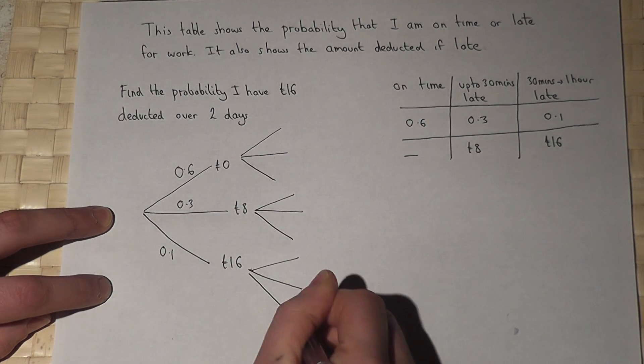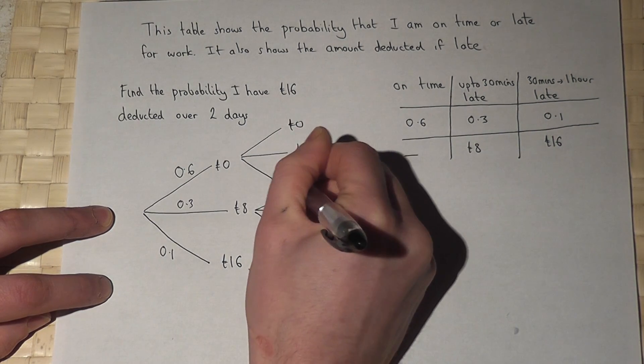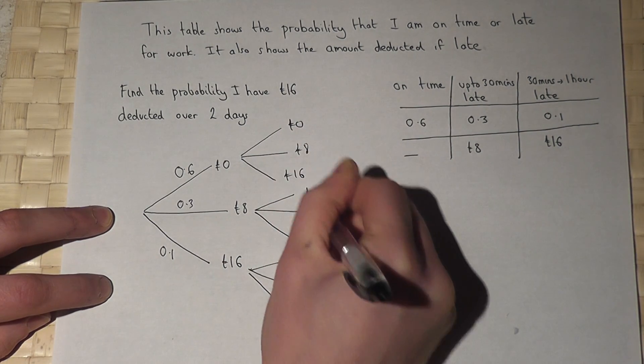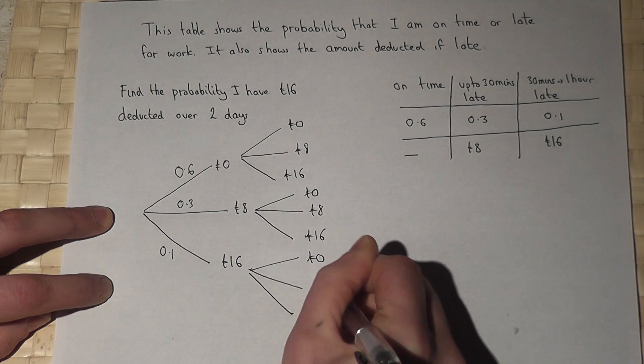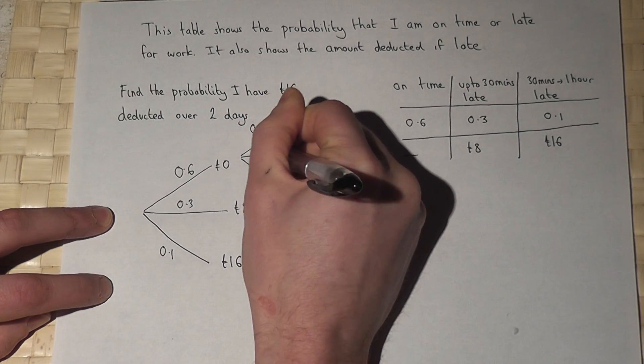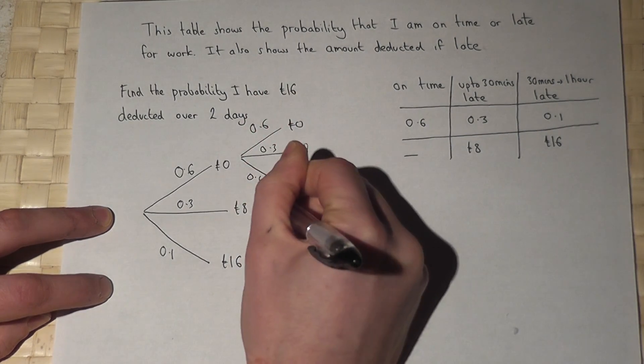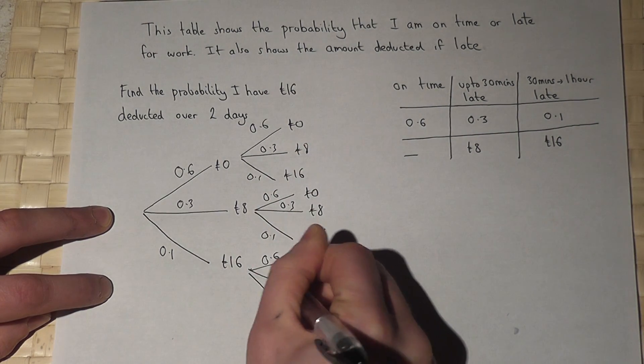So on the second day the same options could occur: deductions of 0, 8, 16, 0, 8, 16, 0, 8, and 16, with the same chances of occurring. So I've now constructed the tree diagram.